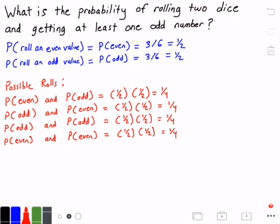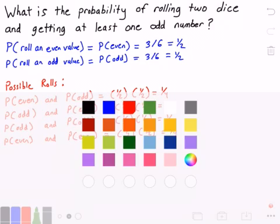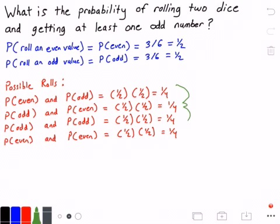So out of these four possibilities, three of them contain at least one odd number. So if I go here, you can see that the first three contain an odd value. Only the last row contains no odd values.